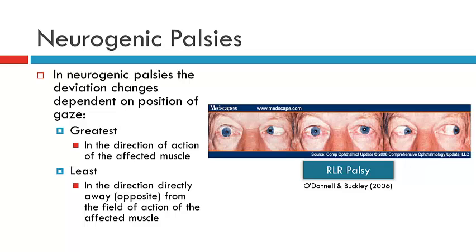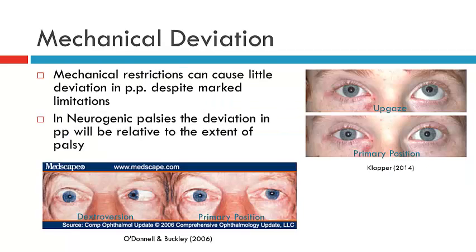For a vertical muscle example, consider a palsy of the left superior oblique. Its field of action is in dextrodepression — right gaze and down. We would expect the deviation to be greatest in this position and least in the opposite direction, which is levo-elevation — left and up gaze.